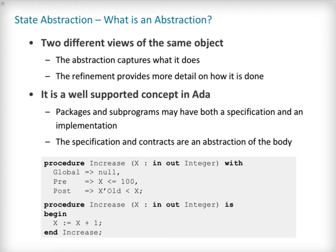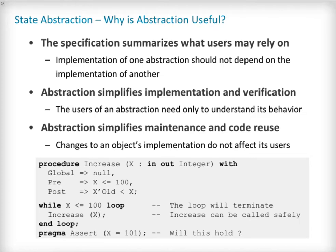Take a look at the example code shown here. The specification of the subprogram called increase states that it should be called on a unique argument, which should be a variable of type integer smaller than 100. Via this contract, it ensures that its only effect will be to strictly increase the value of an argument. To obtain a good abstraction of a subprogram's implementation, its specification should summarize exactly what users of an object can rely on. In other words, user code should not rely on the behaviour of an object's implementation if it is not documented in its specification. For example, callers of increase can assume that it will always strictly increase the value of its argument, meaning the loop is bound to terminate.